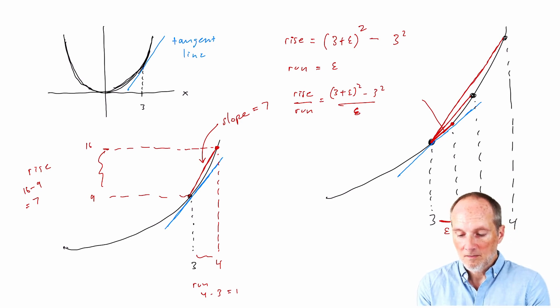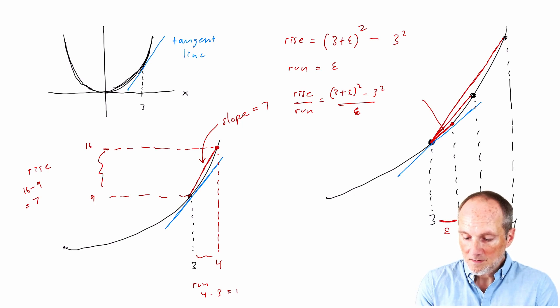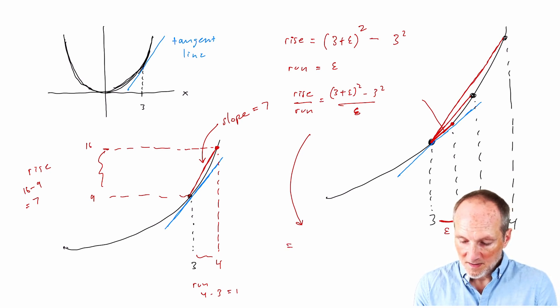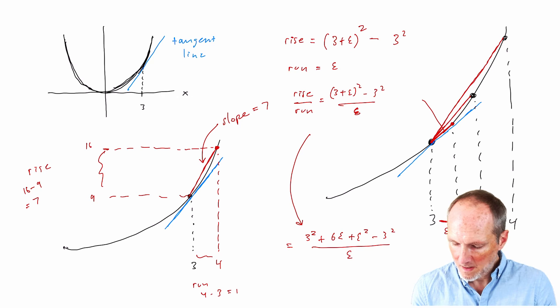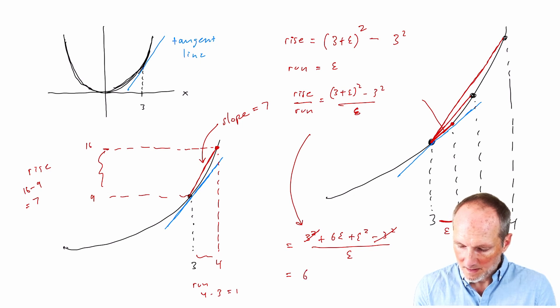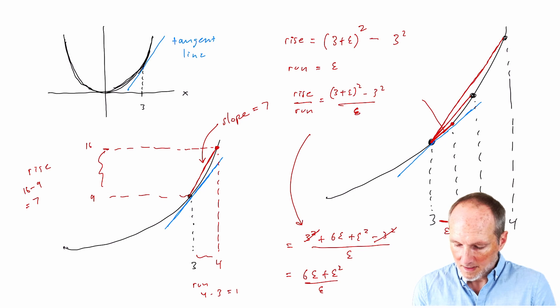Well, let's simplify this. So if we expand 3 plus epsilon squared, we get 3 squared plus 6 epsilon plus epsilon squared minus 3 squared. And clearly, the 3 squared is going to cancel. And so we get 6 epsilon plus epsilon squared over epsilon. We can simplify that further. If we divide, this epsilon and that's going to be equal to 6 plus epsilon.